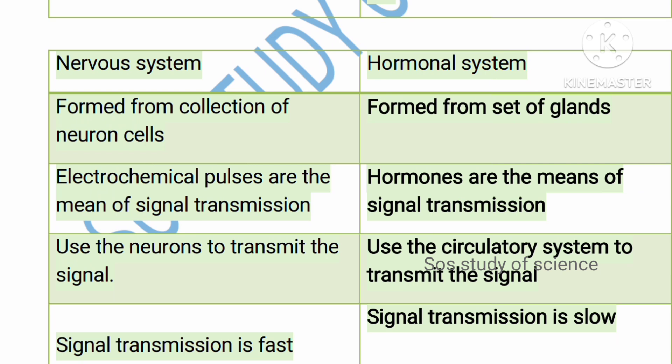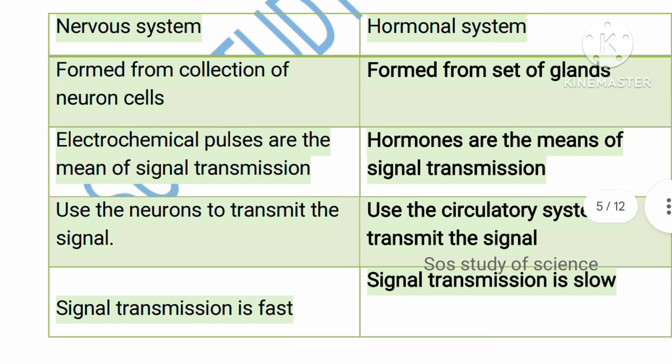The nervous system is formed from a collection of nerve cells — neurons. The hormonal system is formed by a set of glands such as thyroid gland, adrenal gland, and pituitary gland. In the nervous system, electrochemical impulses are the means of signal transmission — messages travel from one neuron to another in the form of electrochemical impulses. In the hormonal system, hormones — which are chemicals — are the means of signal transmission. Neurons are the main source of transmission in the nervous system.